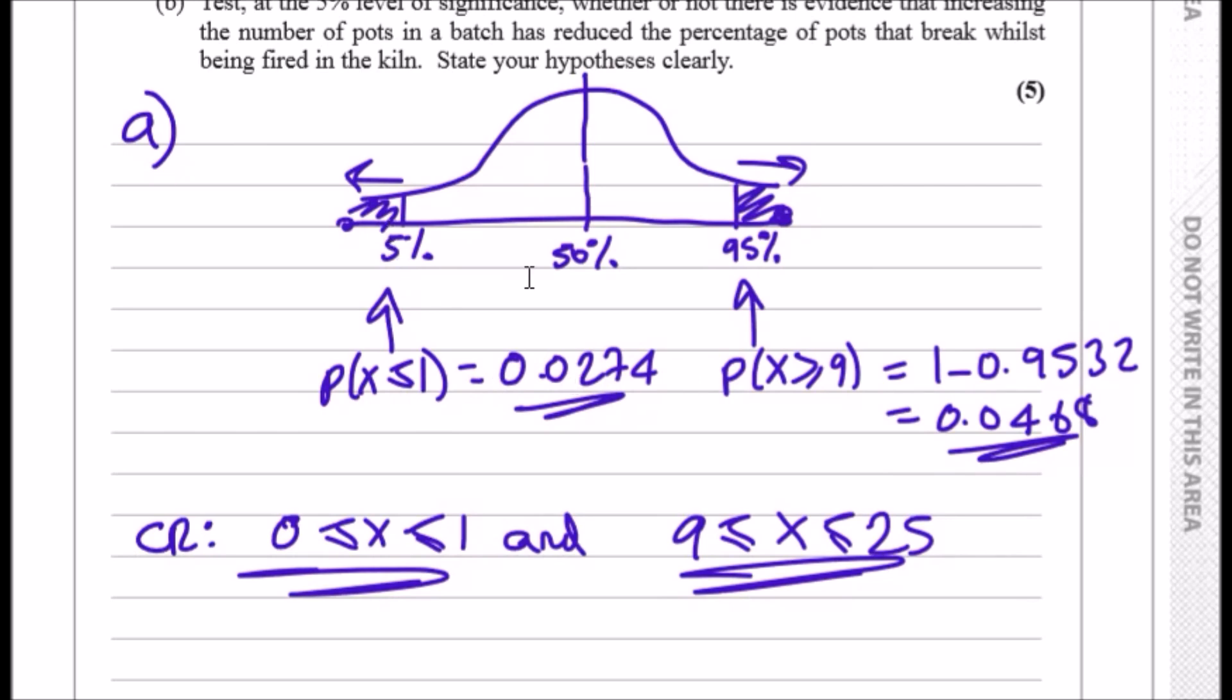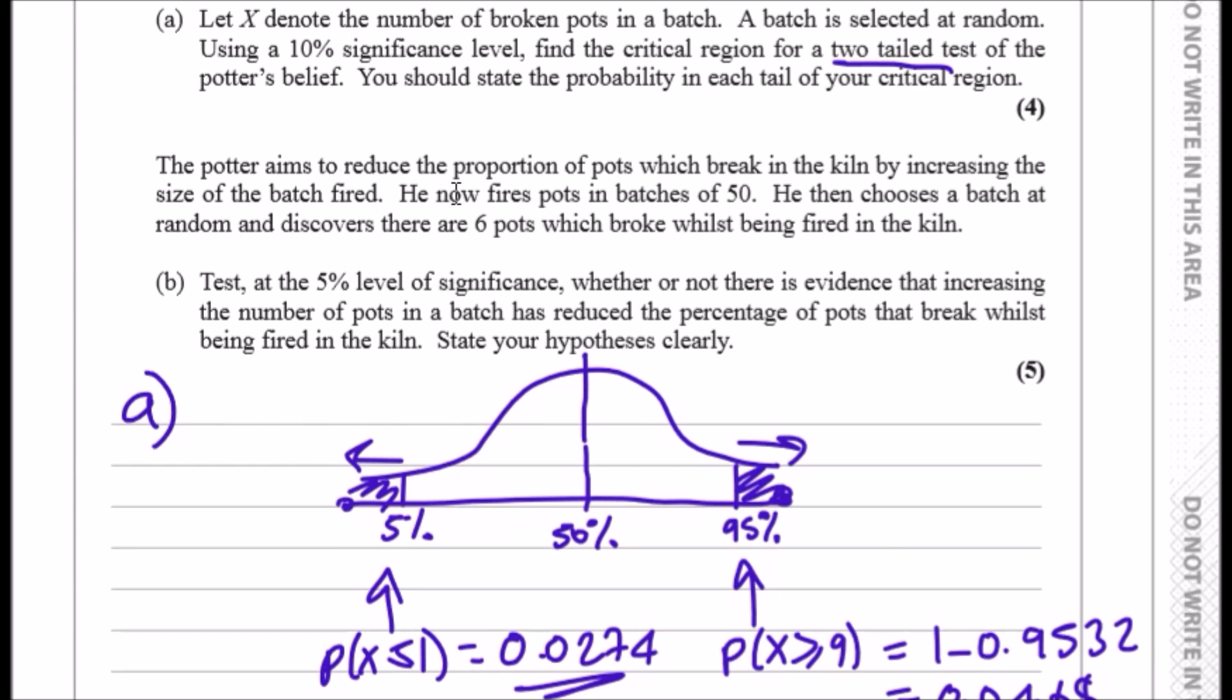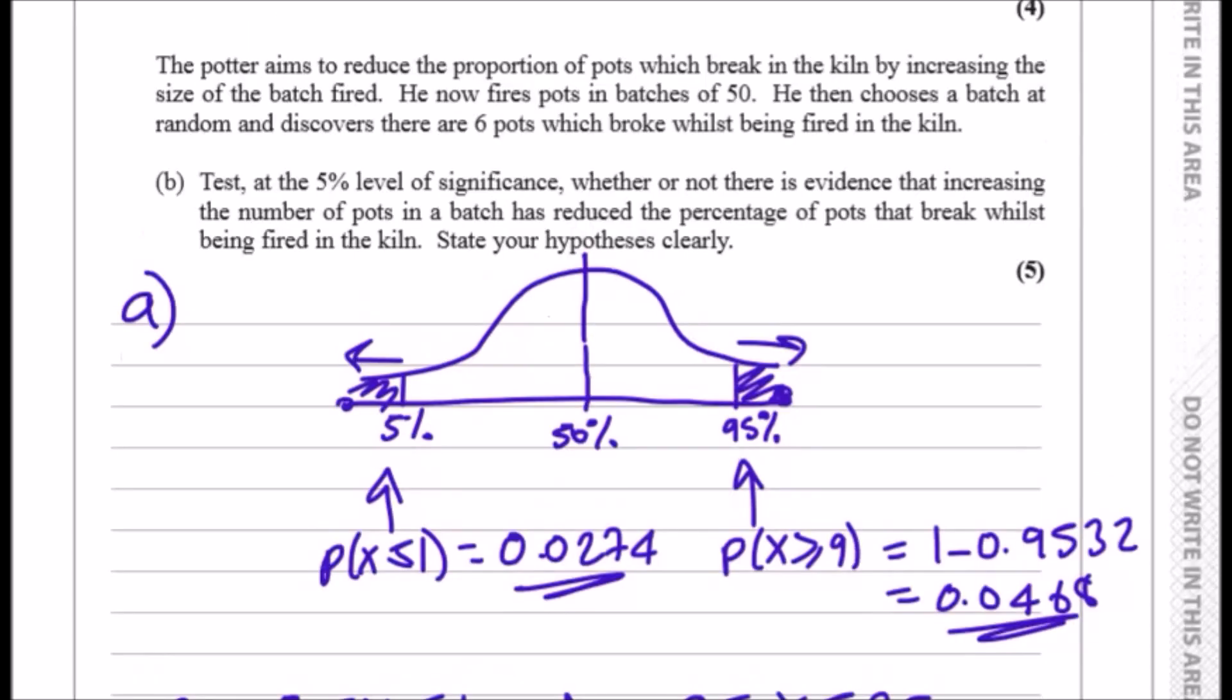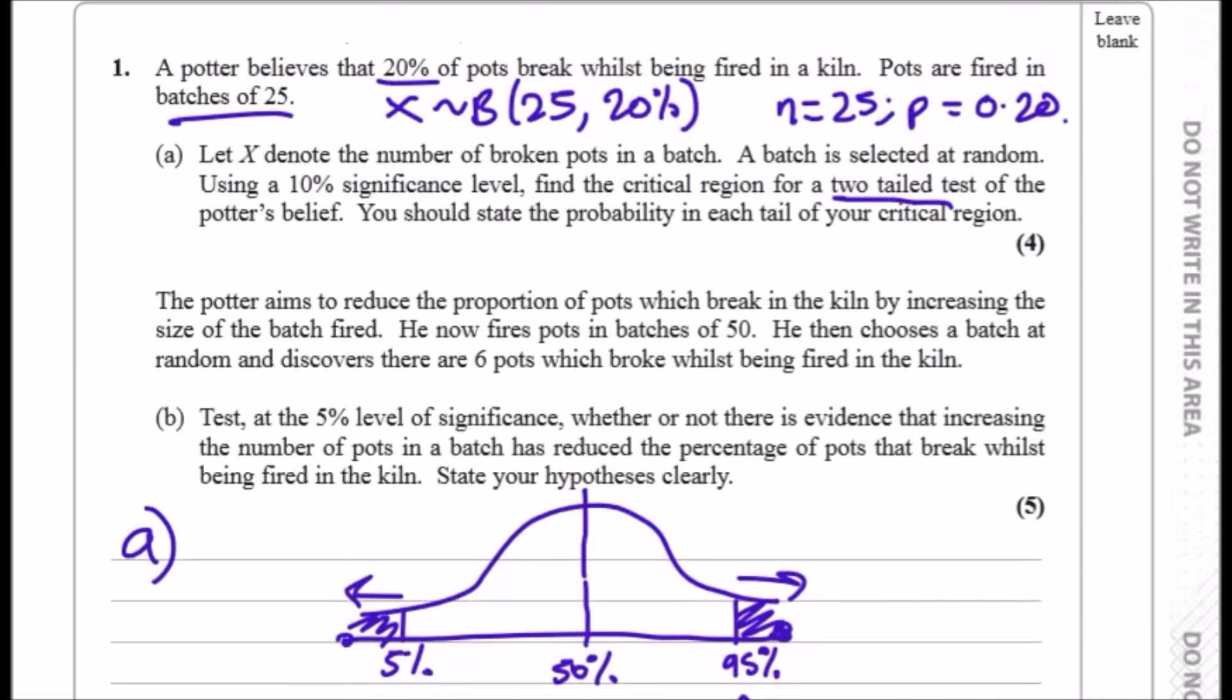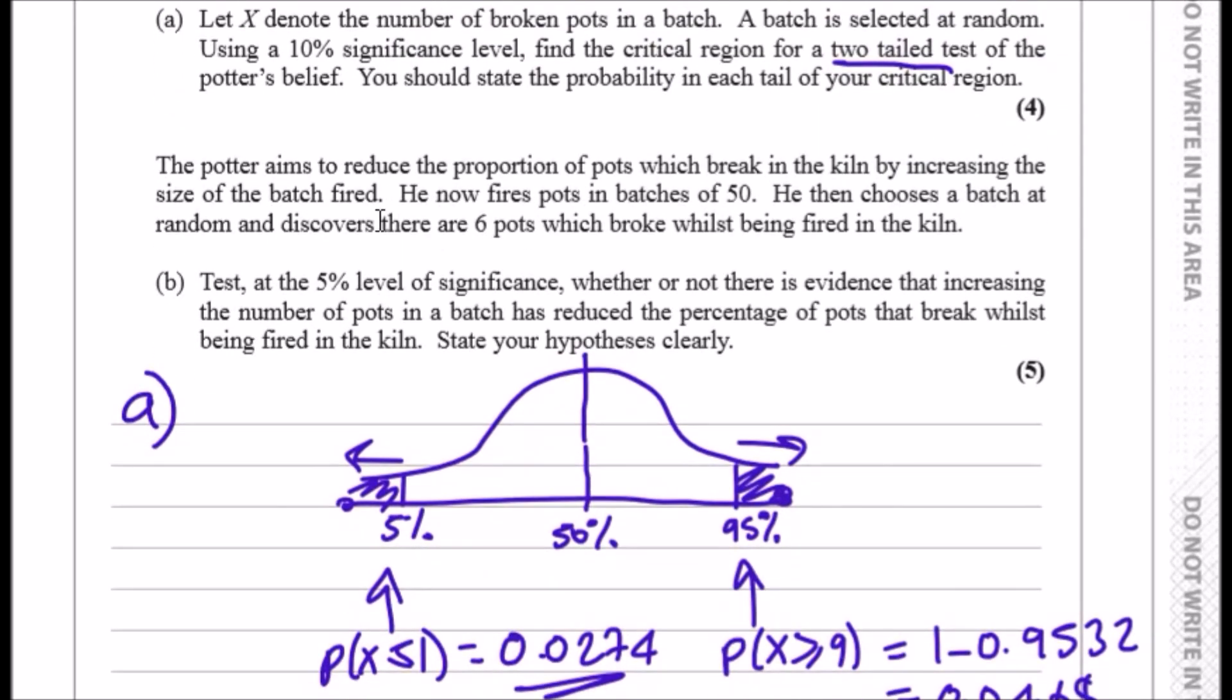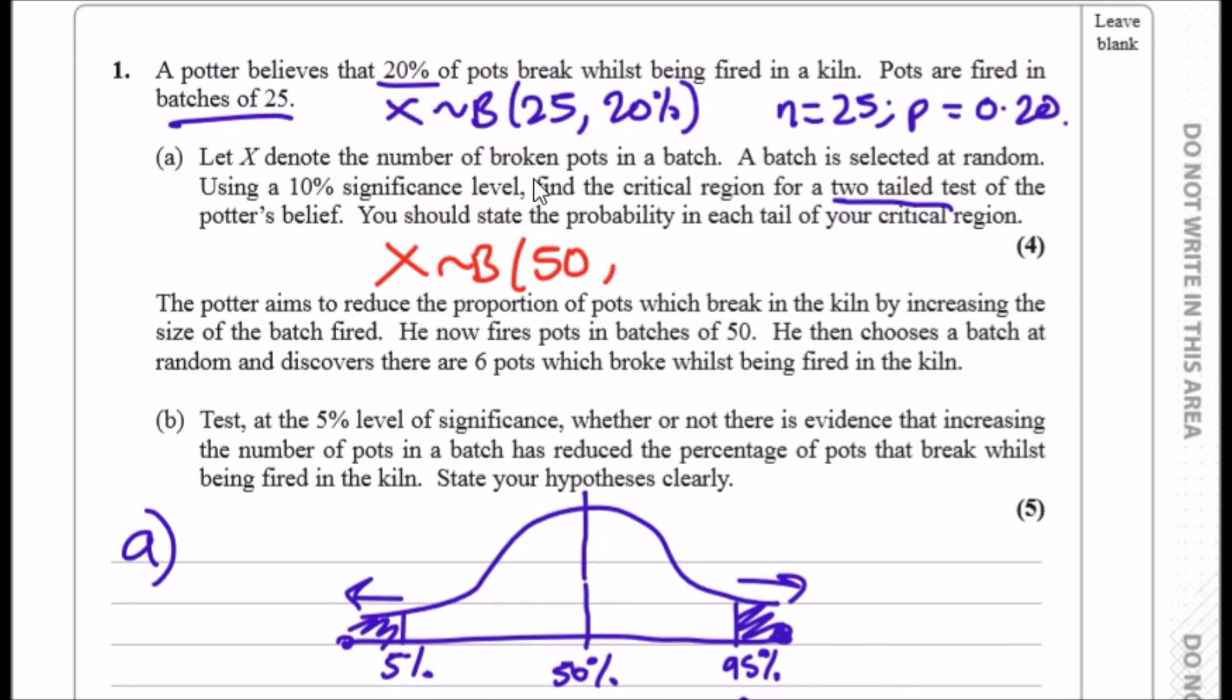Part (b): The potter aims to reduce the proportion of pots which break in the kiln by increasing the size of the batch. He now fires pots in batches of 50. He then chooses a batch at random and discovers there are 6 pots which broke whilst being fired. From the previous question, we had a binomial distribution of 25 batches with a proportion of 20%. Now the distribution changes to n equals 50 with the proportion still 20%.